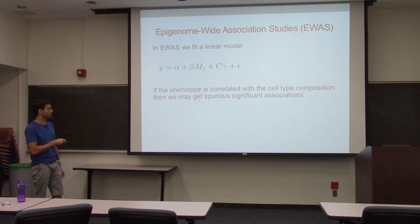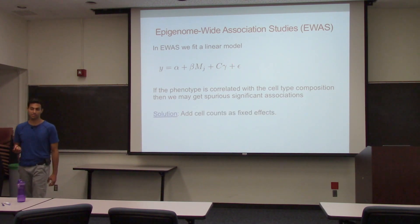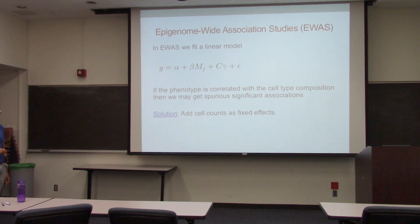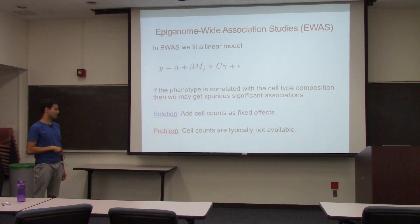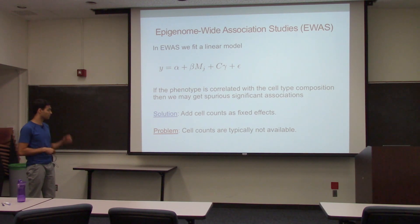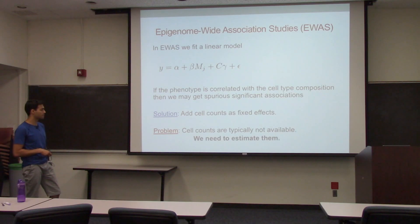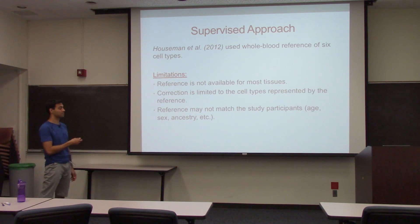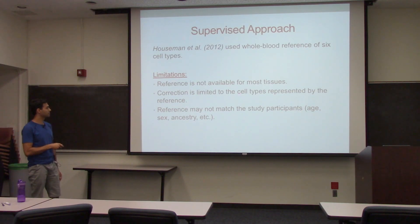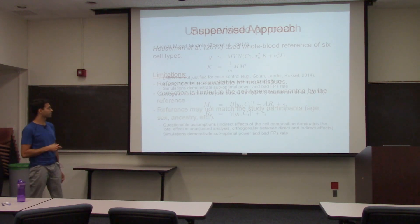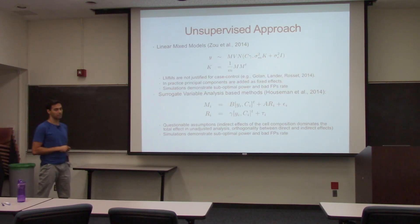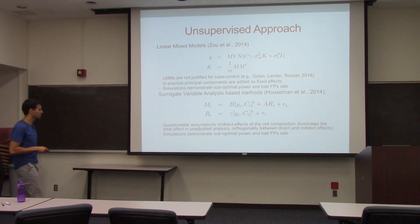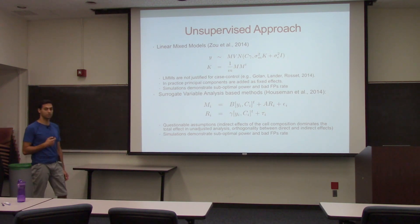We know different cell types have different methylation patterns, and if the phenotype is correlated with cell type composition, we have this confounding effect. An obvious solution is to add cell counts as a covariate. But such data is typically not available — mostly because it's too expensive and practically hard to collect. So we need to estimate them. There is a supervised approach using reference data, but the main problem is that reference data only exists for blood tissue at the moment. There are also unsupervised approaches, including one using linear mixed models, but there are problems with these and we wanted to improve them.